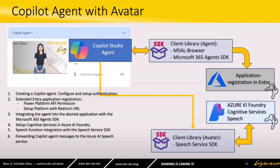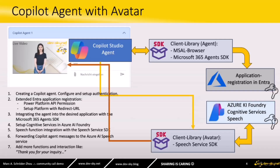As soon as everything is implemented, it is possible to combine both the agent and avatar SDK together, as you can see on the slide. The solution routes the answers and questions from the agent to the avatar. I use some events to detect when the question is sent to the Copilot agent and when an answer comes back from the agent. This sounds easy, but finding the right events was a challenge — and I solved it with a custom store, as you will see later.